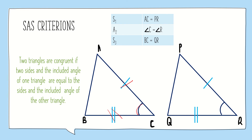But if in the figure it is mentioned that AC is equal to PR, BC is equal to QR, and angle A is equal to angle P, then we cannot say that the two triangles are congruent. Because angle A and angle P are not the included angles between the sides AC and PR, and BC and QR. Hence it is important that the included angle must also be equal.